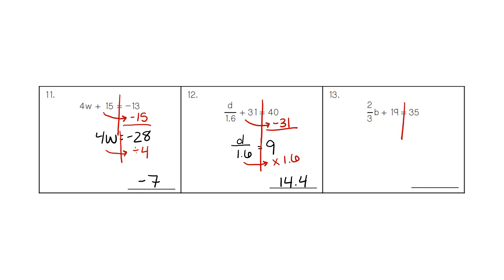For number 13, we take the plus 19 and do the opposite — minus 19. We still have the 2/3 B. When we subtract 35 minus 19, we get 16. We continue doing the opposite: instead of multiplying, we divide by 2/3. On the calculator, 16 divided by 2/3 is 24.